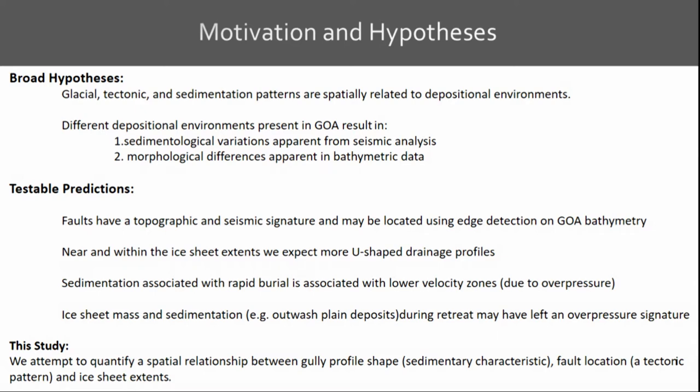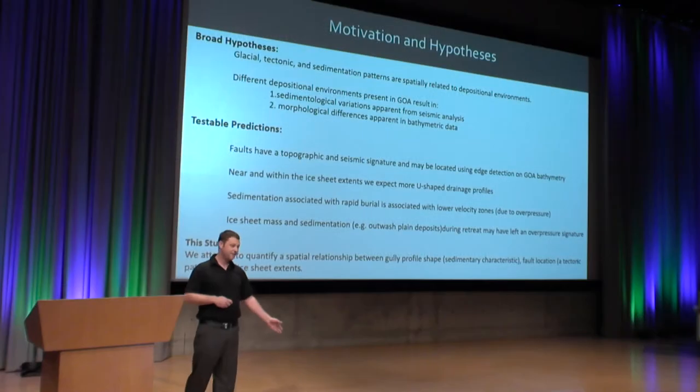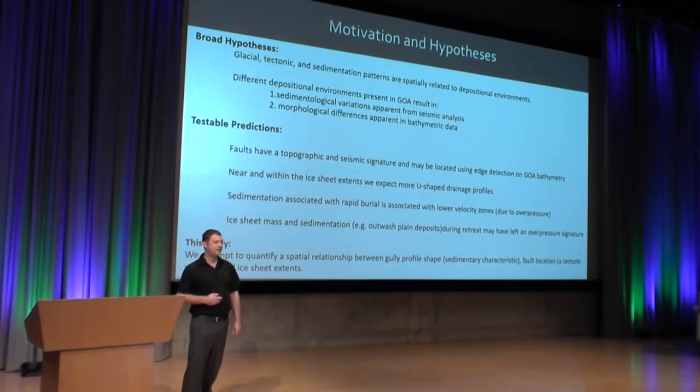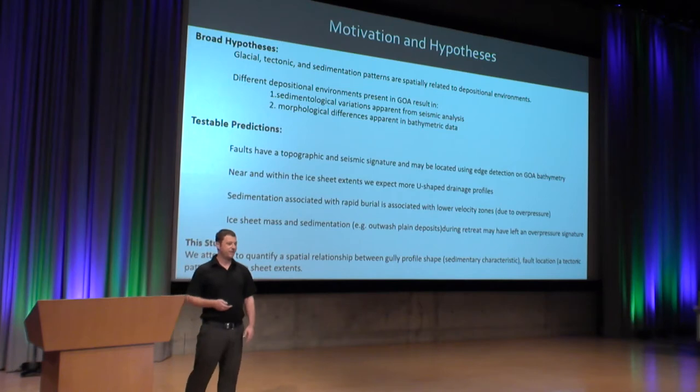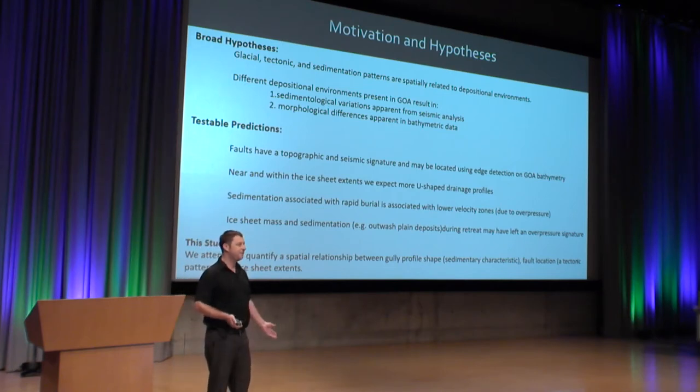Essentially, the idea is we can use edge detection to map faults in the Gulf of Alaska. With respect to ice sheets that have been in and out of the Gulf, we can see U-shaped drainage profiles within the extent of the ice sheets and V-shaped away from that. Sedimentation associated with rapid burial may cause low velocity zones, as the fluid pressure responds by increasing according to the mass loaded on top. In our study, we're attempting to quantify these spatial relationships, particularly between gully profile shape and ice sheet extents.